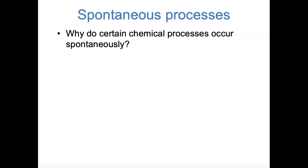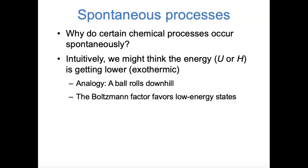So why is it that certain chemical processes happen spontaneously? Your first instinct might be that things happen spontaneously to make the energy of a system lower. For example, bonds tend to form spontaneously, or electrons tend to spontaneously move down to their electronic ground state. This idea is appealing because it's analogous to what happens in classical mechanics — a ball tends to roll downhill to lower its gravitational potential energy. We've also seen in our coverage of statistical mechanics that Boltzmann factors tell us that lower energy states are more likely to be occupied.